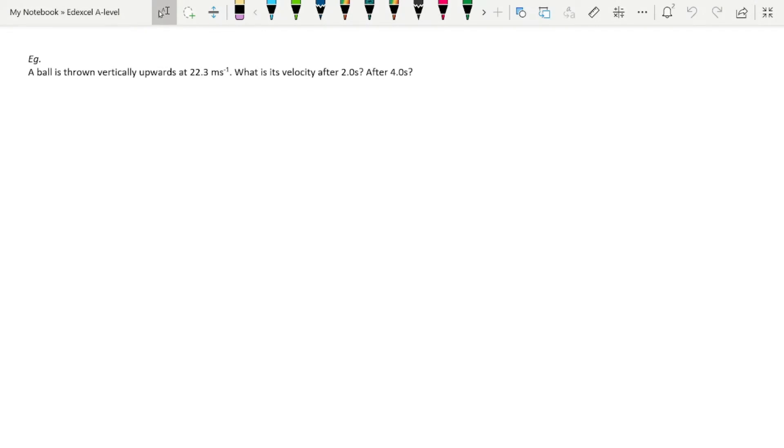For example, a ball is thrown vertically upwards at 22.3 meters per second. What is its velocity after 2 seconds and after 4 seconds? If we imagine this, we've got a person's hand throwing the ball. The instant they release it, the ball is traveling upward at 22.3 meters per second, and then it comes back down again.